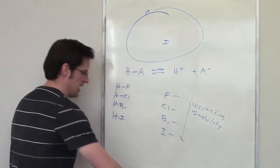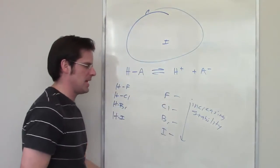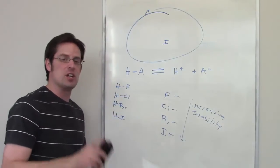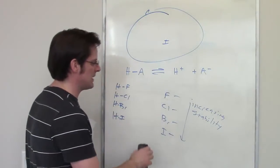That tells us, then, that as you go down a column on the periodic table, acidity increases, not because of electronegativity, but because of increasing size.